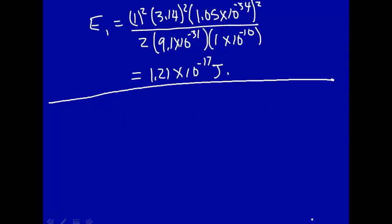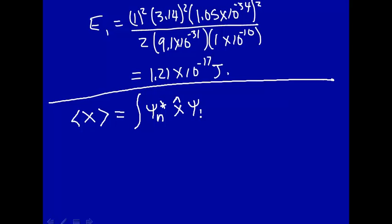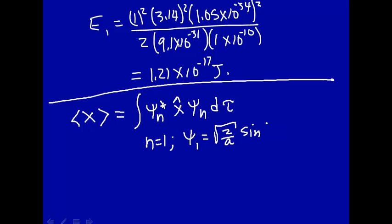We want the average value of position — the expectation value of position — which will be the integral of the complex conjugate of the wave function for state n, times the operator corresponding to position, operating on the wave function for state n, integrated over some region of space d tau. We want the n equal 1 state. We know that the wave function for a particle in a 1D box is the square root of 2 over a times the sine of pi x over a, where n equals 1. The position operator is just multiplication by x.